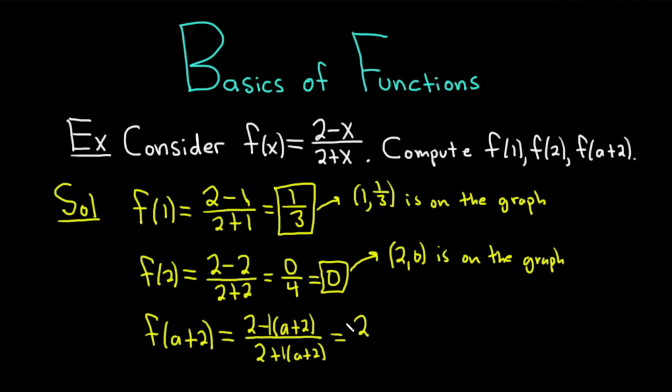That's 2. Then negative 1 times a is negative a. And then negative 1 times 2 is negative 2. Over, and on the bottom, we have 2 plus a plus 2. The 2's cancel. We get negative a over a plus 4. And so that would be the y value when x is equal to a plus 2.